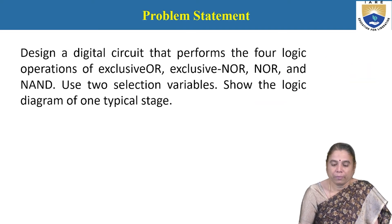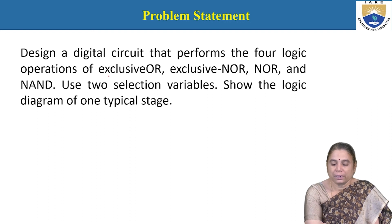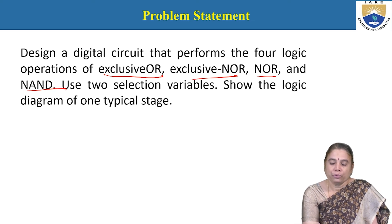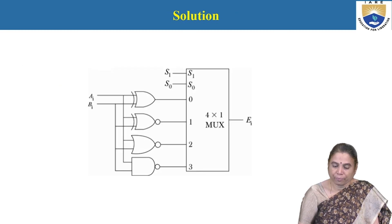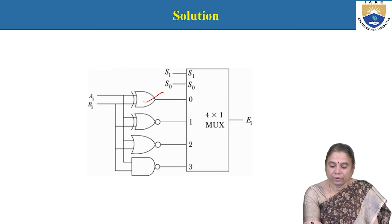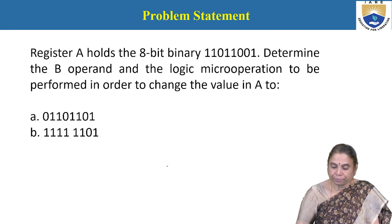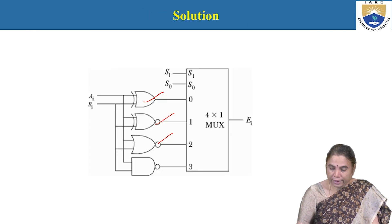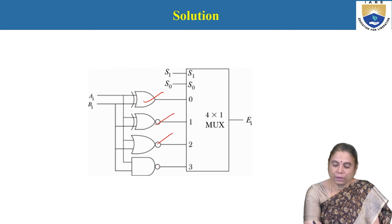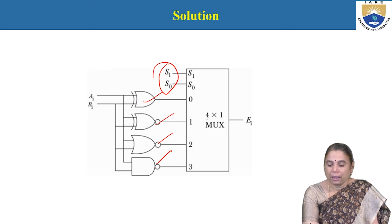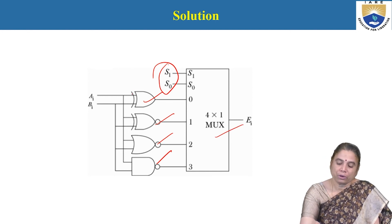The next problem: design a digital circuit that performs 4 logic operations — Exclusive-OR, Exclusive-NOR, NOR, and NAND — using 2 selection variables. Two selection lines are required to select among these 4 operations. A 4-by-1 multiplexer selects one particular logic operation among the four, with the outputs of the XOR, XNOR, NOR, and NAND gates fed as inputs to the multiplexer.